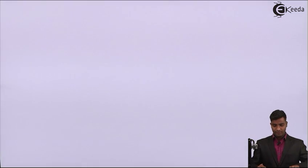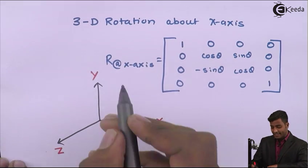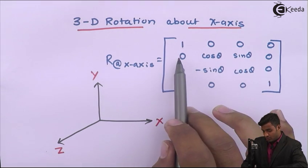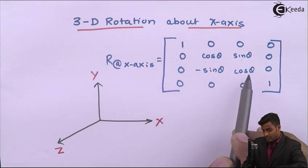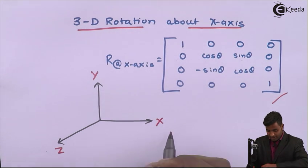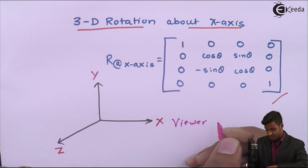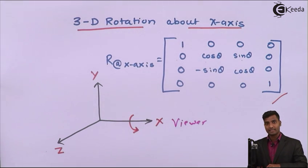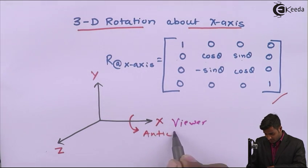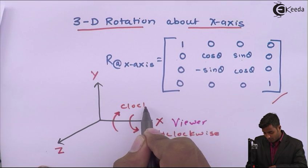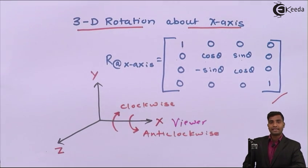Now we will see rotation about the X axis. The standard matrix for 3D rotation about the X axis is: [1, 0, 0, 0 / 0, cos θ, -sin θ, 0 / 0, sin θ, cos θ, 0 / 0, 0, 0, 1]. The viewer looks from the positive X direction toward the origin. If the object rotates in one direction it is anticlockwise; the other direction is clockwise.